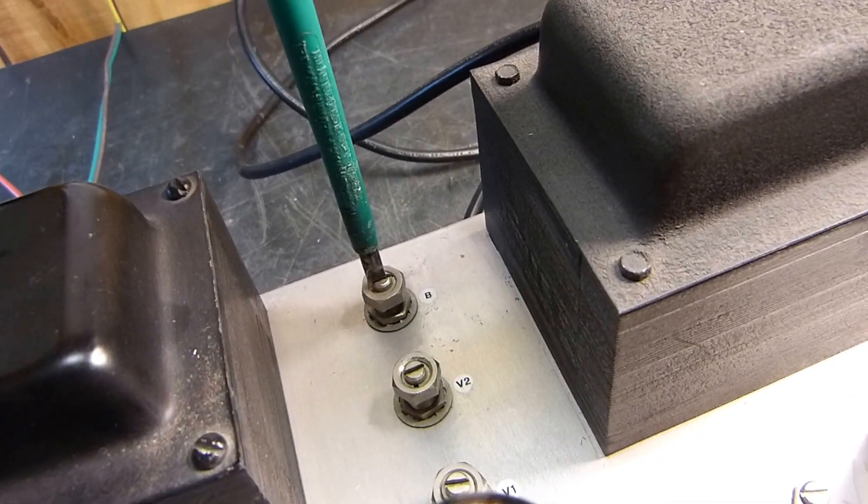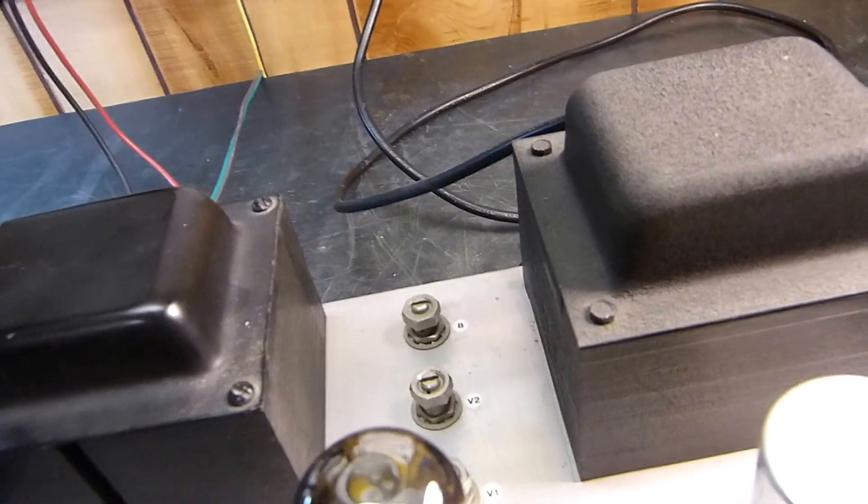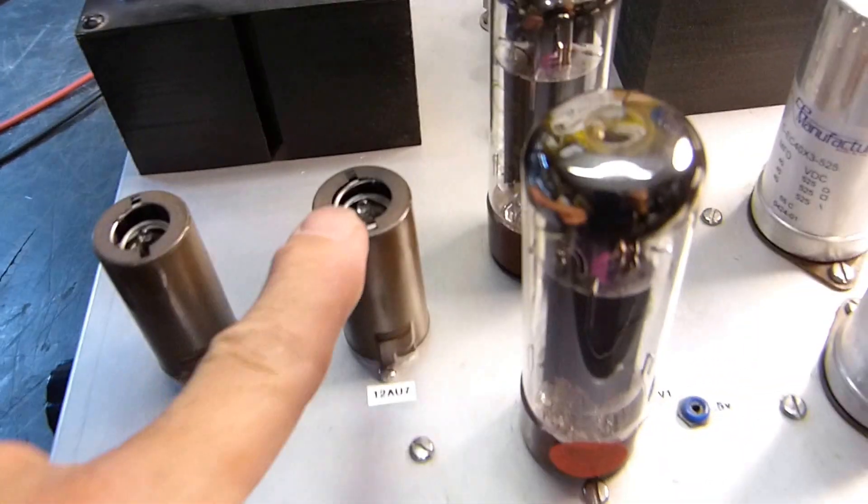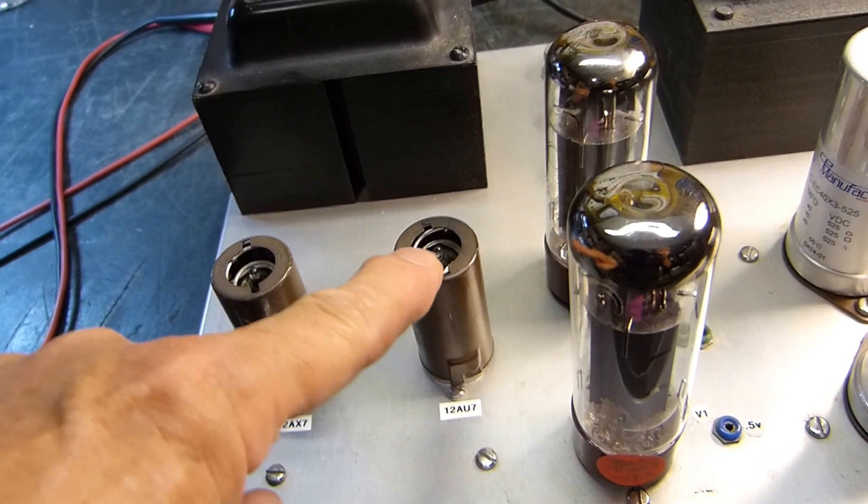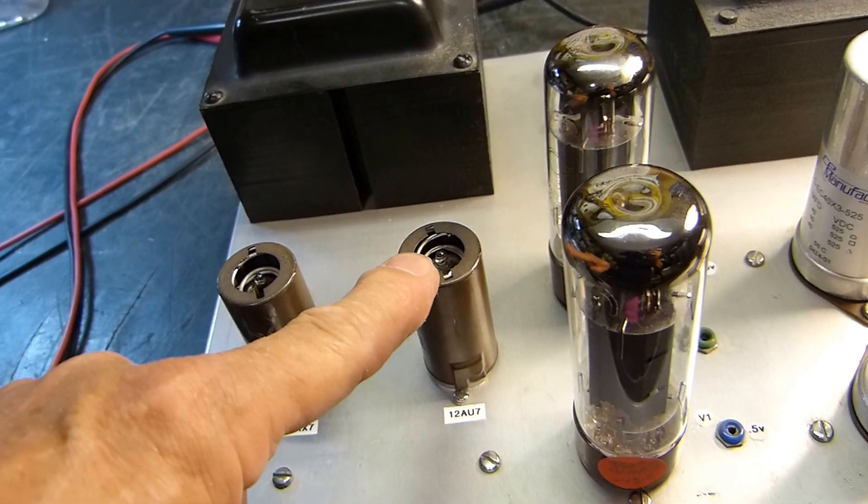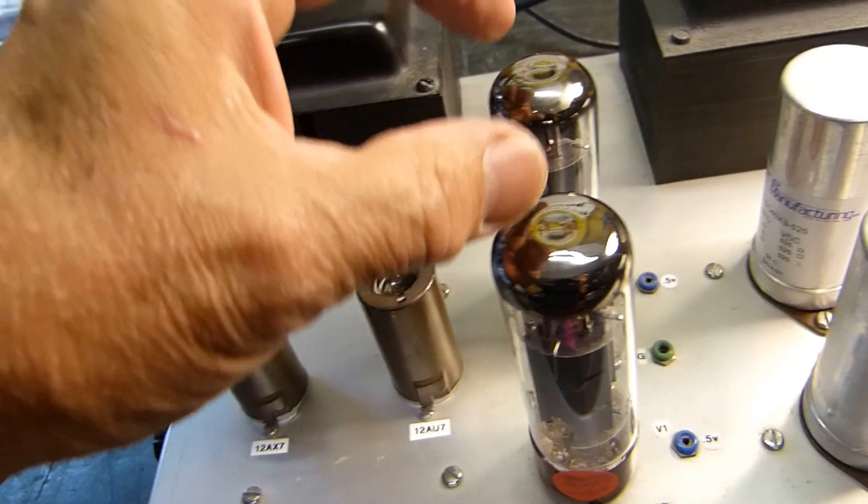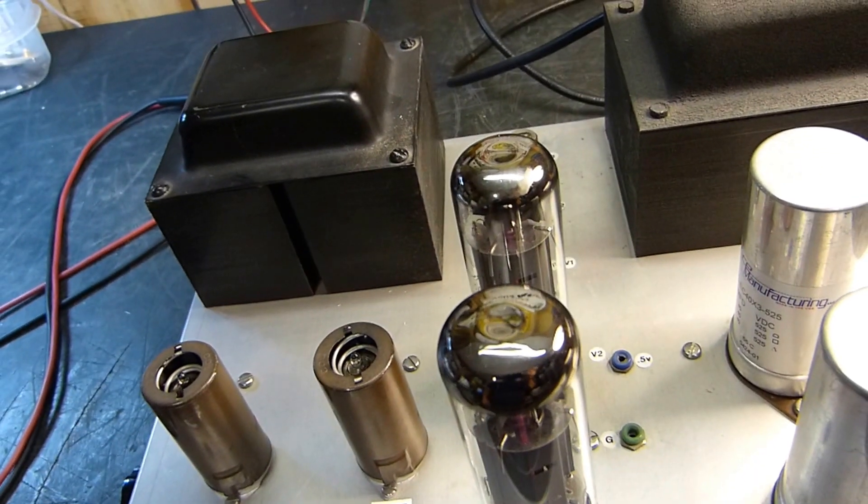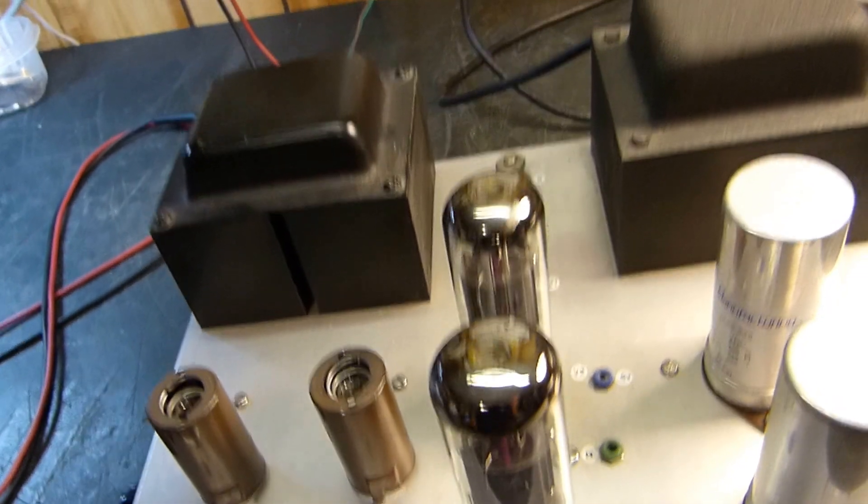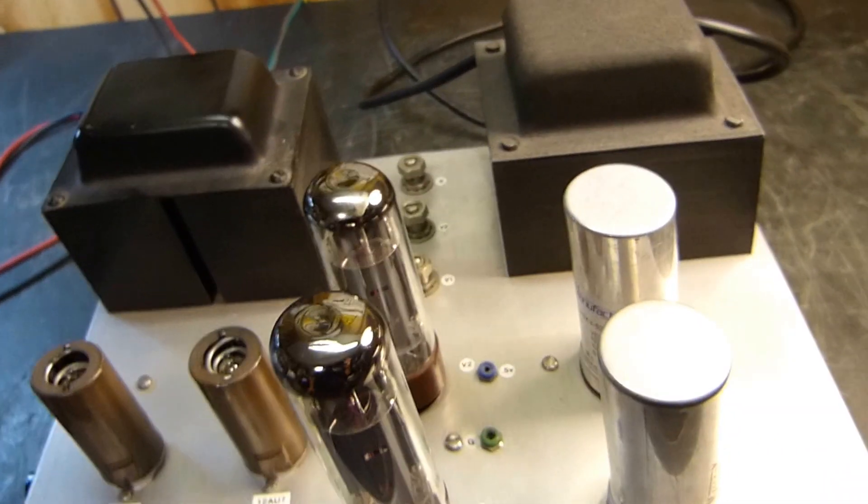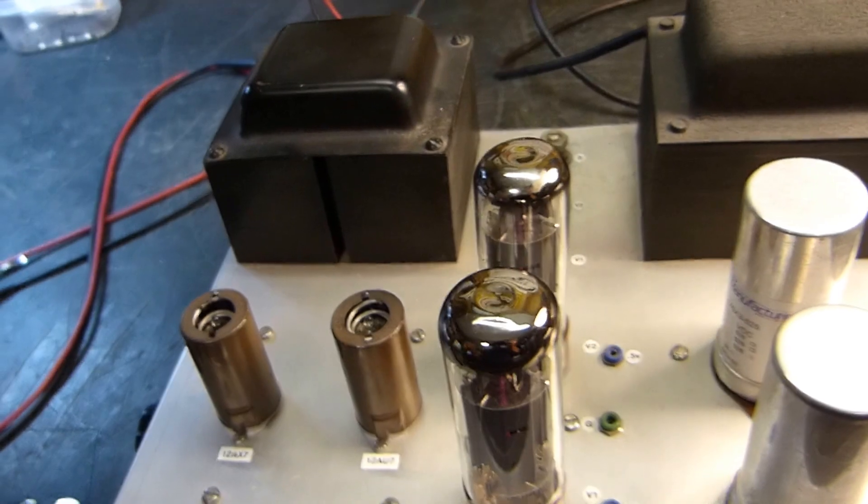About in the middle would be right there. What that's doing is balancing the driver stage of the second triode in the 12AU7, the driver stage driving the output tubes. That's what the book says. If you have no equipment, do it that way and be happy.